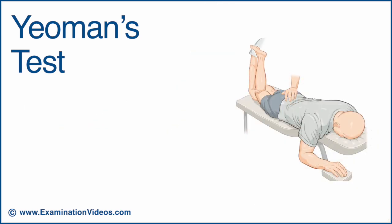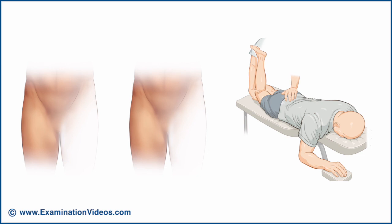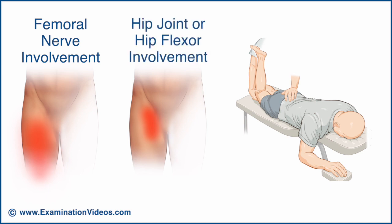In the final testing position, pain may also arise from a number of other structures. For example, if the test produces anterior thigh pain or paresthesia, it may indicate femoral nerve involvement. If the test produces anterior upper thigh or groin pain, it may indicate hip joint or hip flexor involvement.